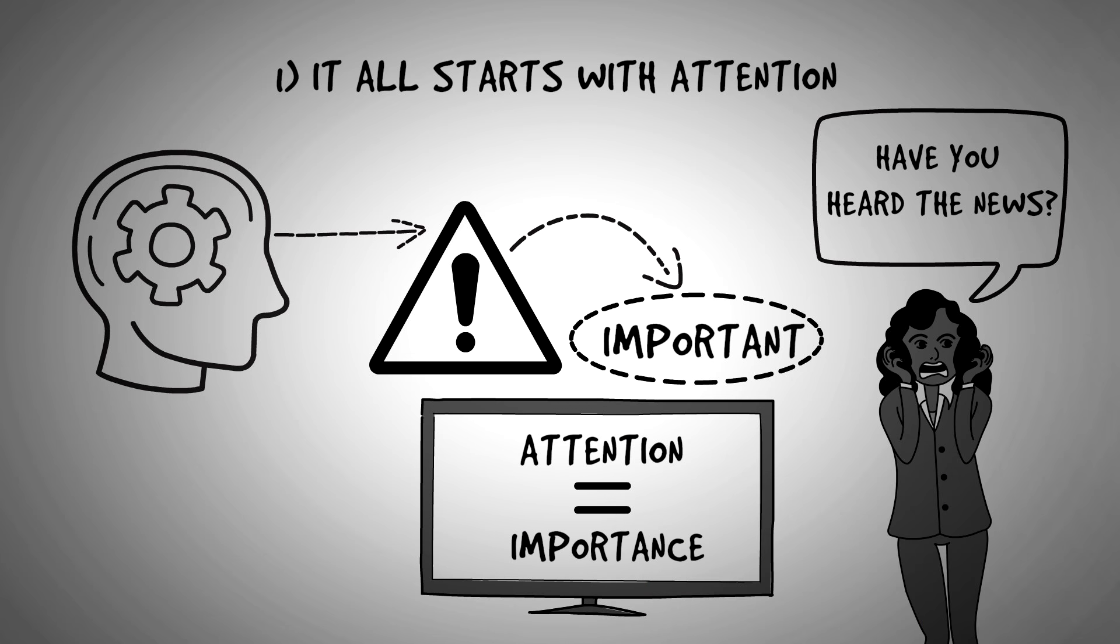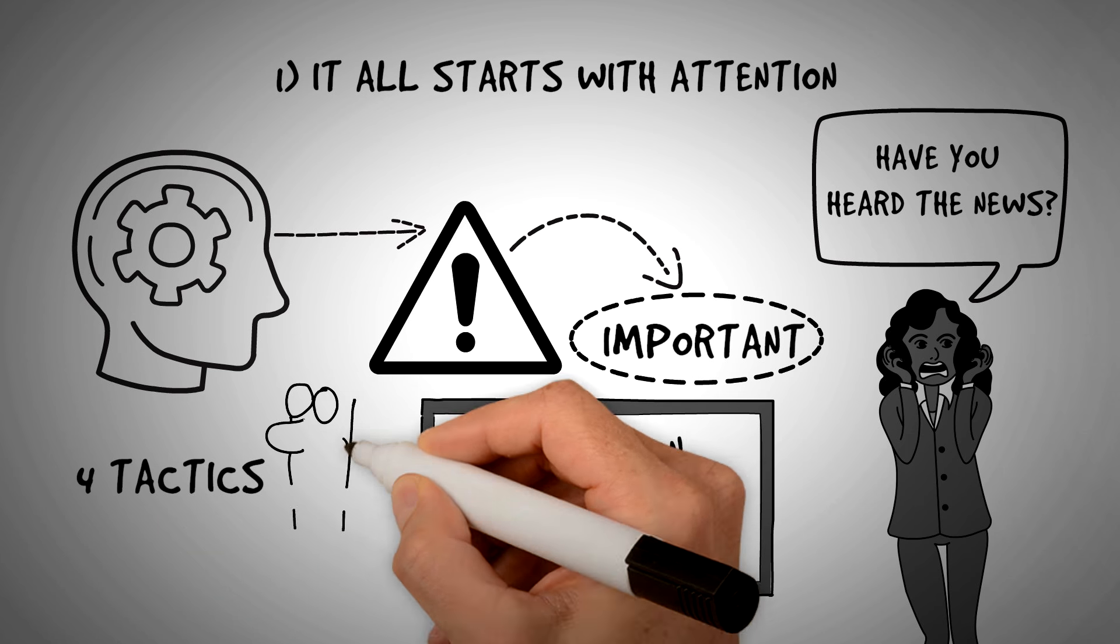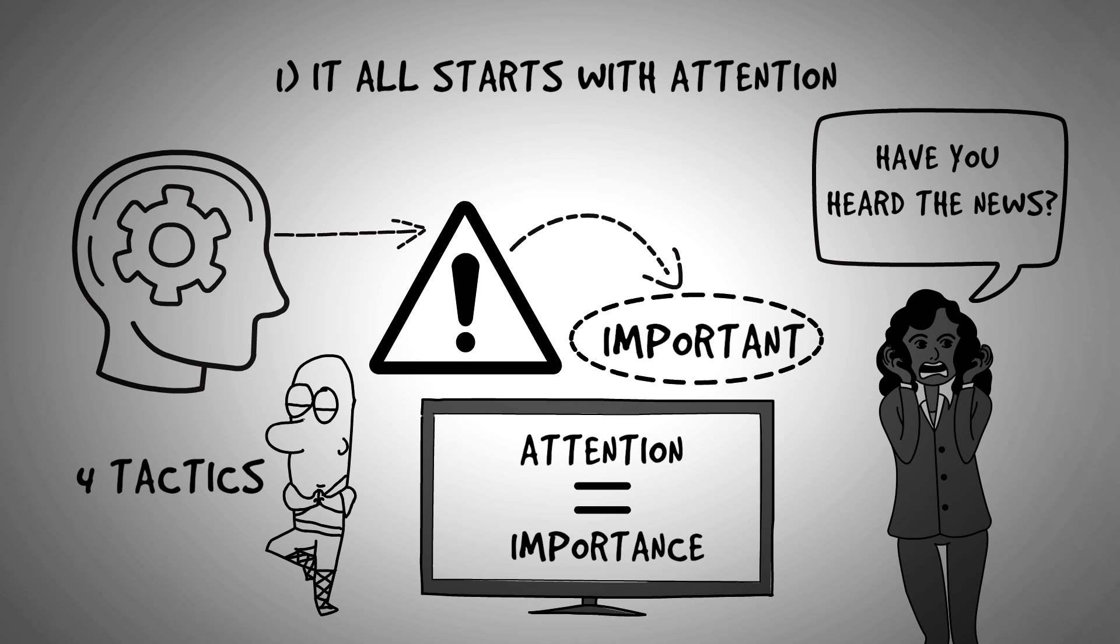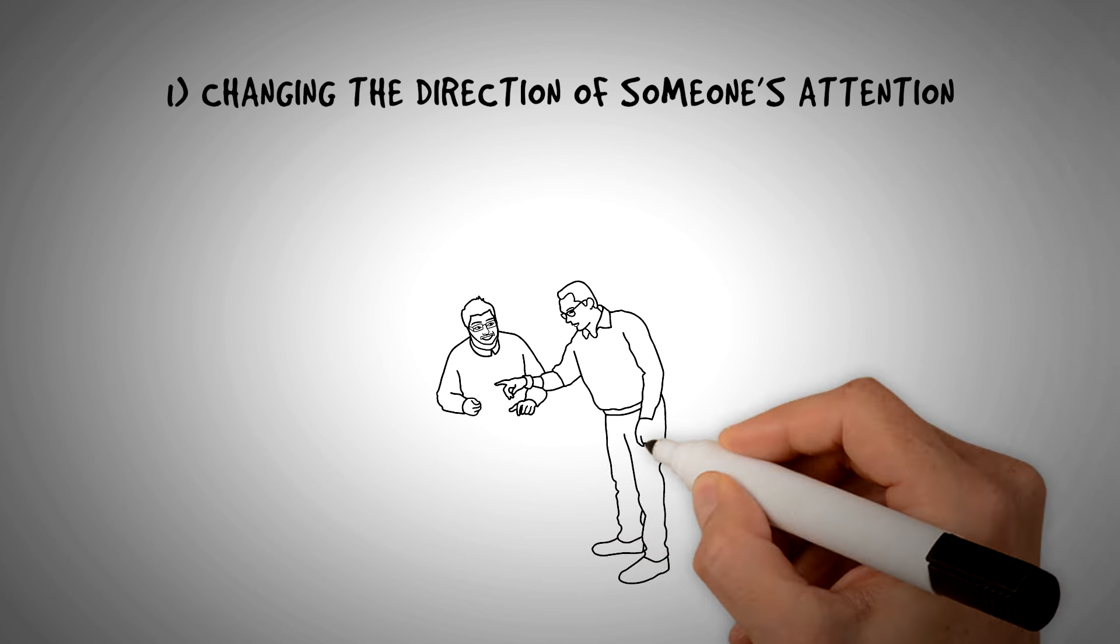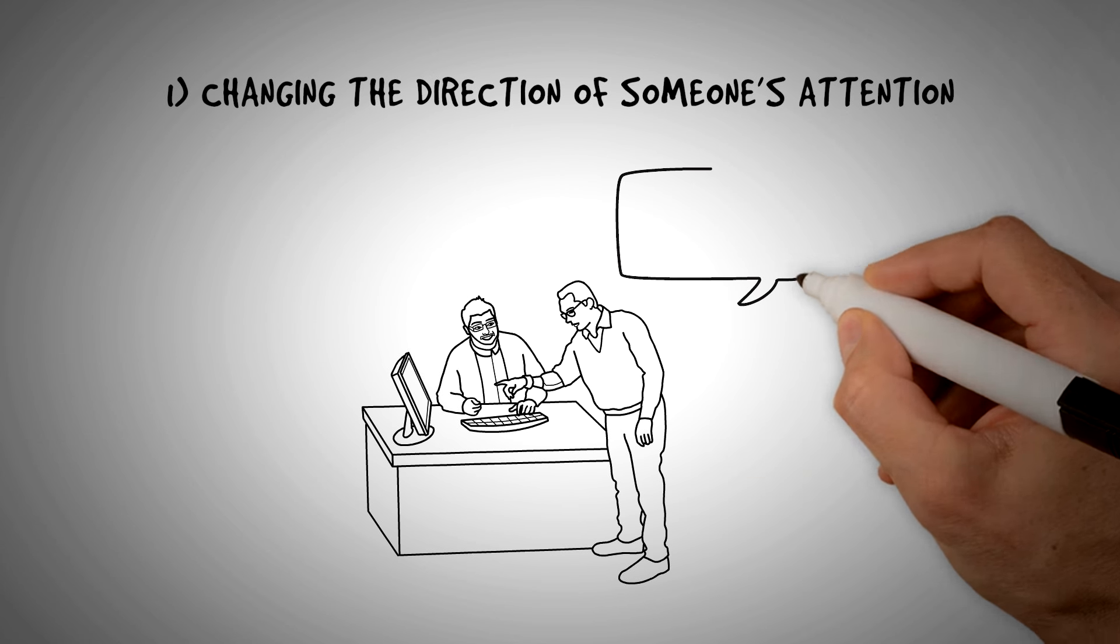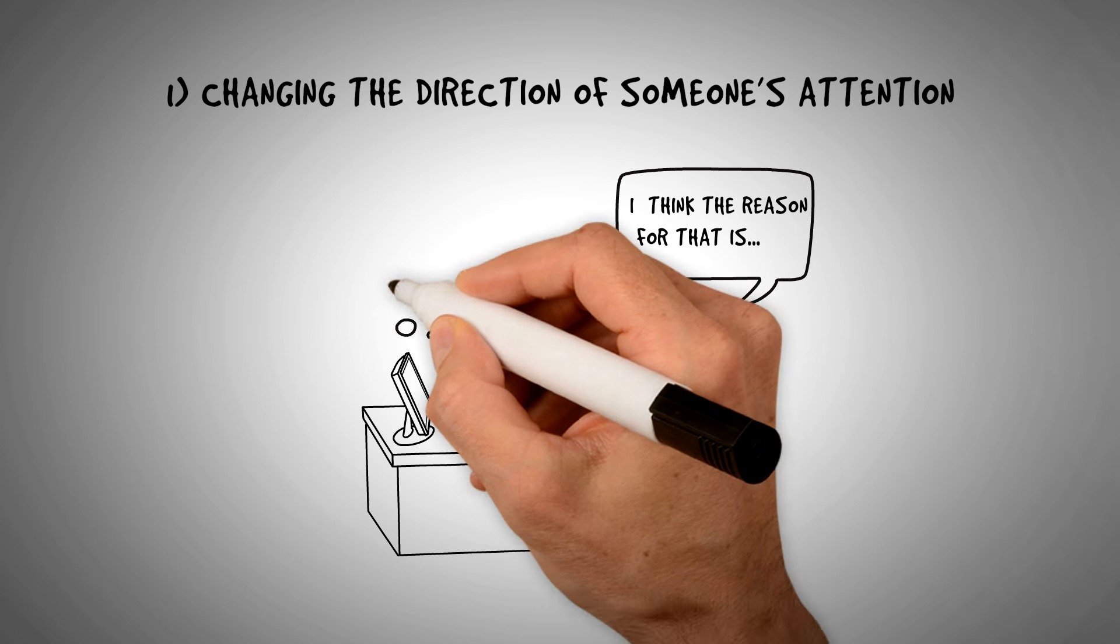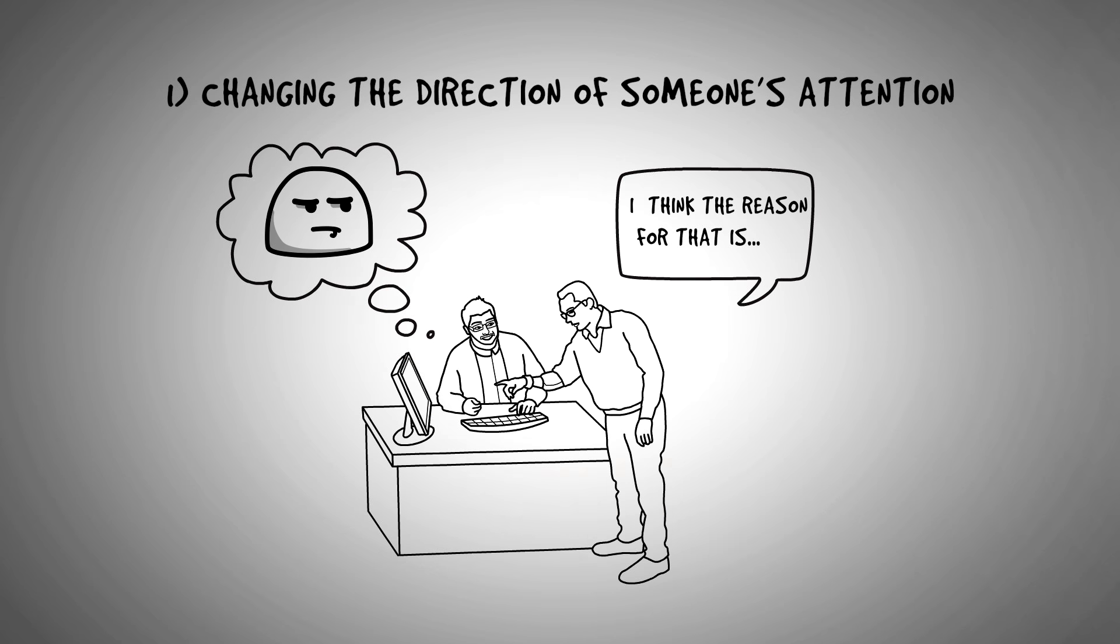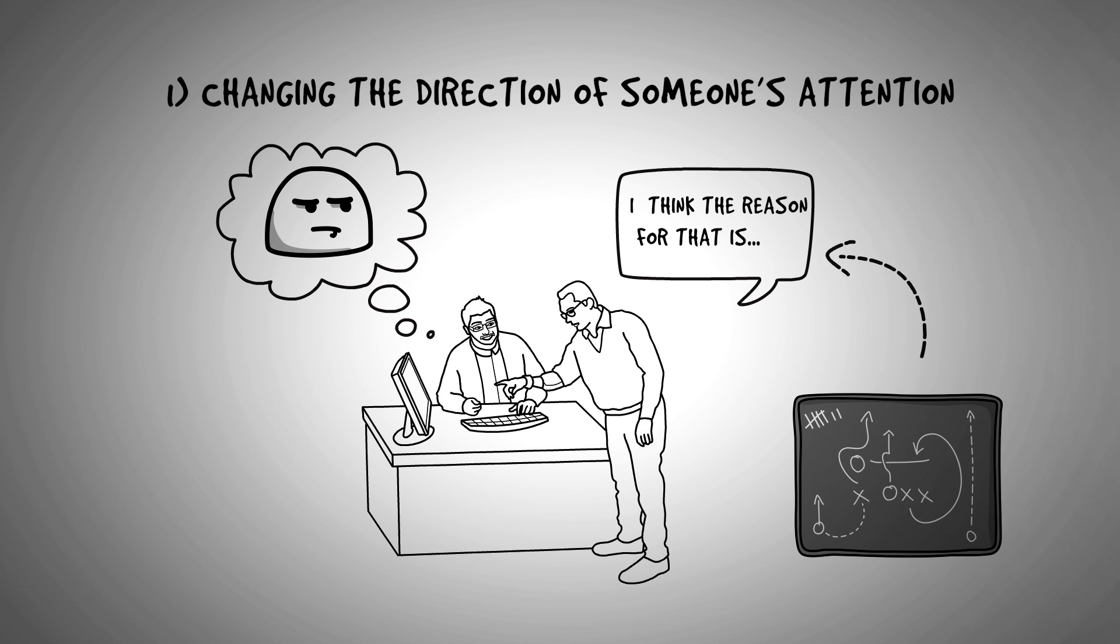If you want to persuade anyone of anything, you need to be able to capture, hold, and direct their attention. Cialdini offers four tactics that can transform you into a master of attention. Number one is changing the direction of someone's attention. In the most trivial argument you might have at work or at home, you're trying to convince someone by giving them reasons. But this is typically the hardest way to change someone's mind, as we have all experienced. A much easier and powerful tactic is to change what the person is paying attention to.